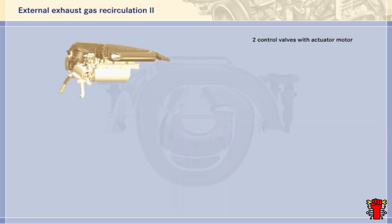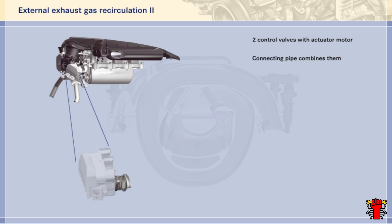Each of the two recirculation lines has a continuously variable valve with an actuator motor; the valves and motors are combined into one single compact component. Behind the recirculation valves, the exhaust gases are combined into one single connecting pipe and conveyed into the intake pipe. Both the actuator motors and the connecting pipe are liquid-cooled.